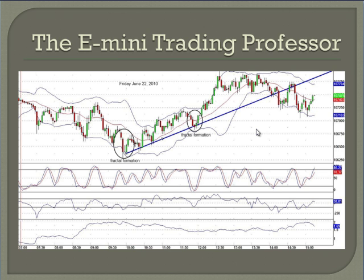As a chaos theory adherent I'm aware that there are these substructures called fractals that exist within the randomness, and they can give you an indication of potential moves one way or the other depending on whether it's a bearish or bullish fractal. These two right here are both bullish fractals. This one right here is a bearish fractal, and you can see what happens right after that.